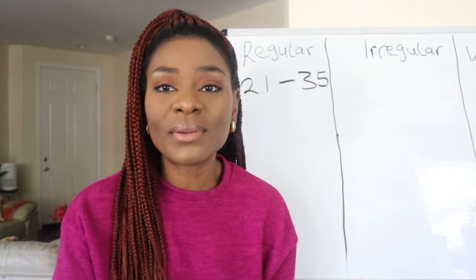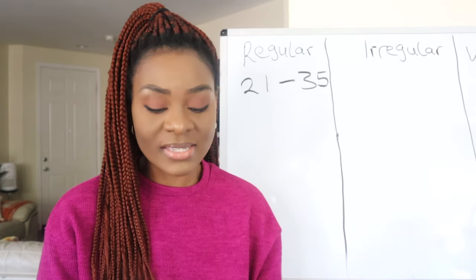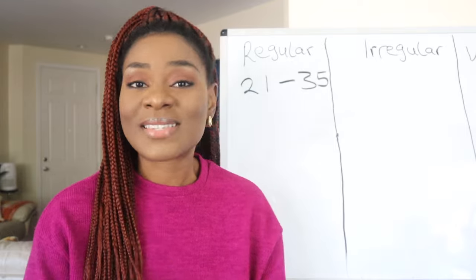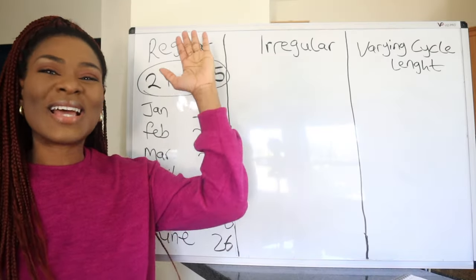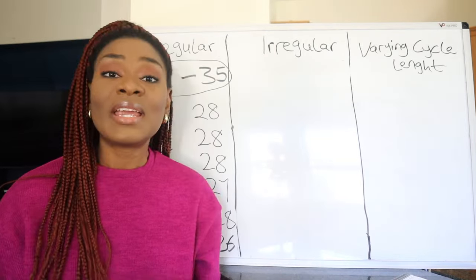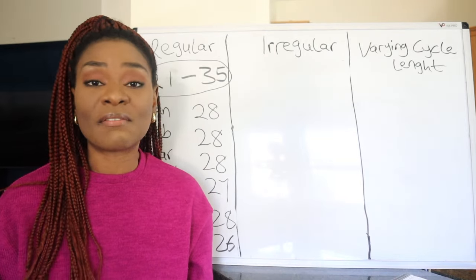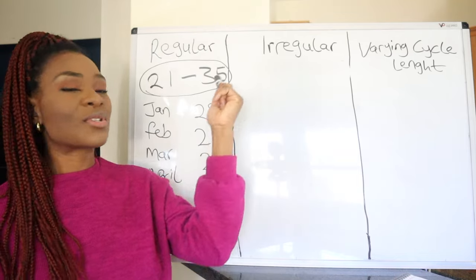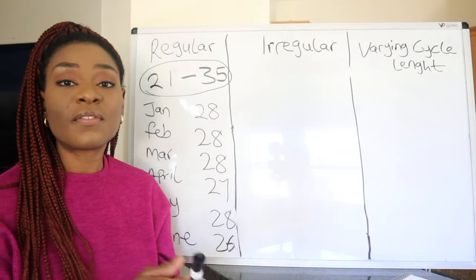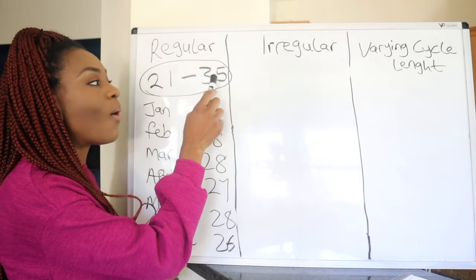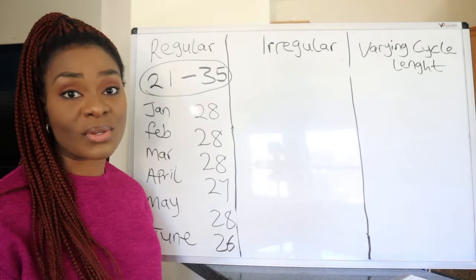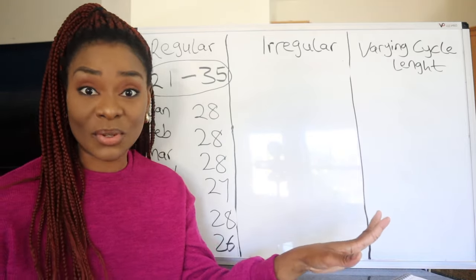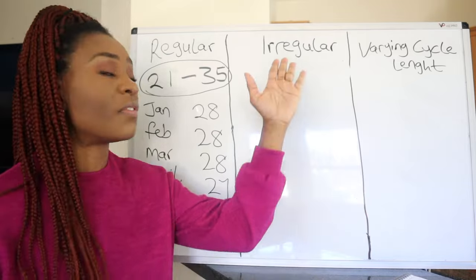According to science, if your cycle length falls within 21 to 35 days, you have a normal regular cycle. Now let's talk about an irregular cycle. Irregular periods are periods that fall outside of the normal cycle length — below 21 days or above 35 days. That is what is considered irregular and abnormal.